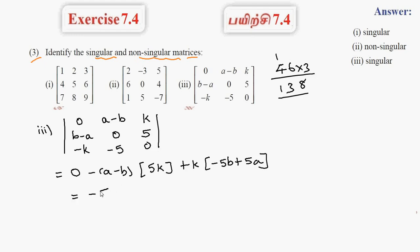Minus 5ak plus 5bk minus 5bk plus 5ak. Cancel.